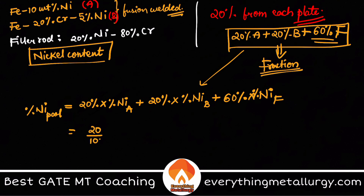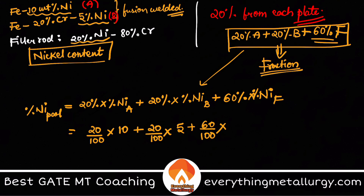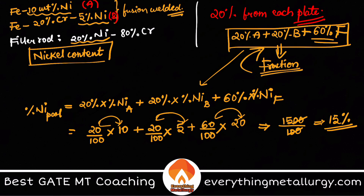Calculating: (20/100) × 10 + (20/100) × 5 + (60/100) × 20. This gives 200 + 100 + 1200 = 1500, divided by 100, which equals 15%. So the percentage of nickel present in the weld pool is 15%. I hope you understood how we used the concept of dilution and the composition fractions — volume fractions or surface area fractions — to calculate the weld pool composition. You can use this to find any element's composition, not only nickel.